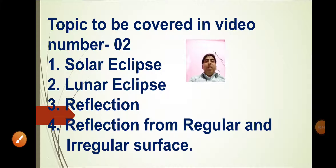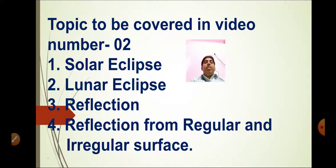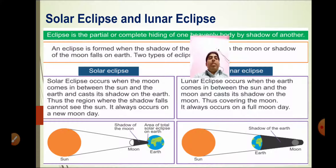Good morning everyone. This is Standard 6 Science, Chapter 11: Light, Shadow and Reflection. In the previous video we read about the pinhole camera, shadow, and the characteristic features of shadow. In this video we are going to read about solar eclipse, lunar eclipse, reflection, and reflection from regular and irregular surfaces.